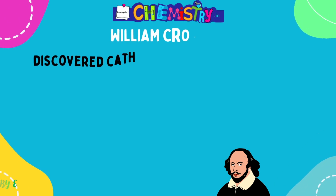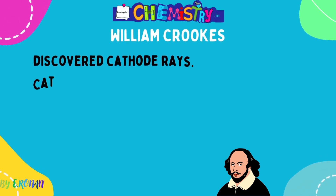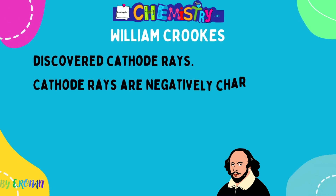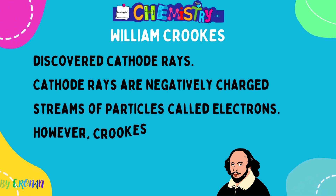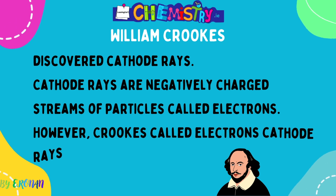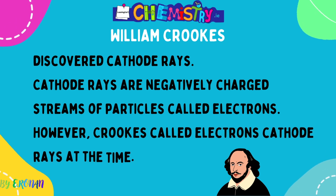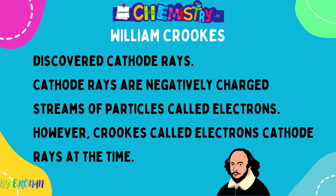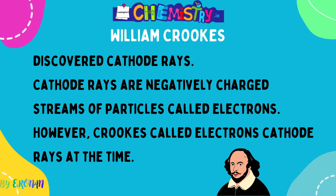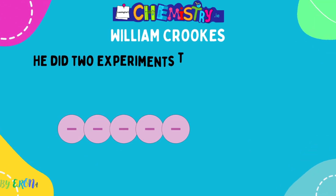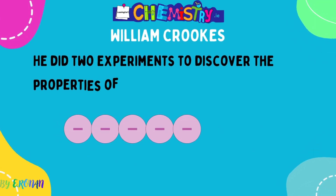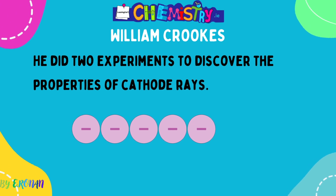William Crookes followed on from Dalton and discovered what are called cathode rays. The definition: cathode rays are negatively charged streams of particles which we now call electrons. However, the word 'electrons' had not been coined at the time, so Crookes referred to these streams of particles as cathode rays. He then went on to do experiments to discover the properties of cathode rays — remember, streams of negatively charged particles.